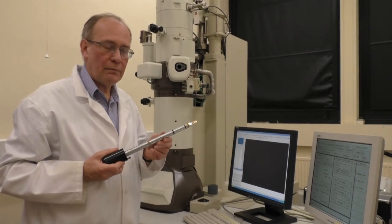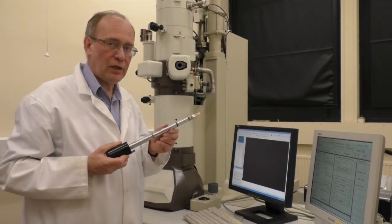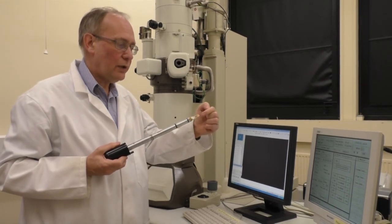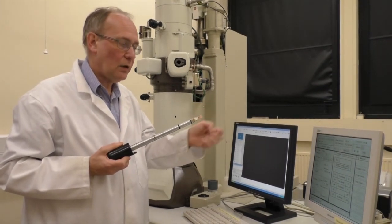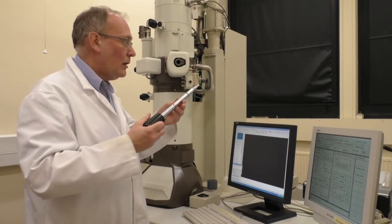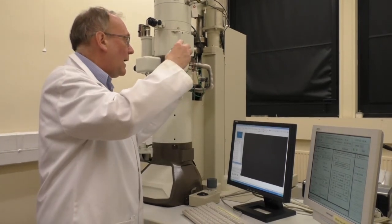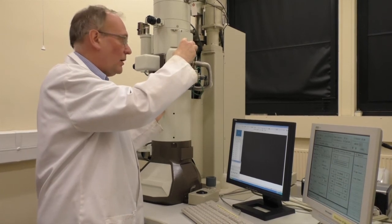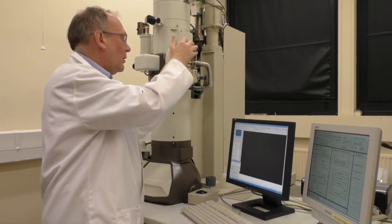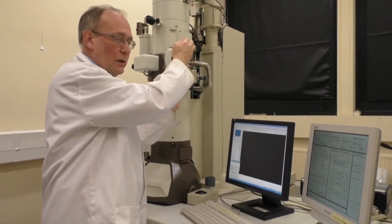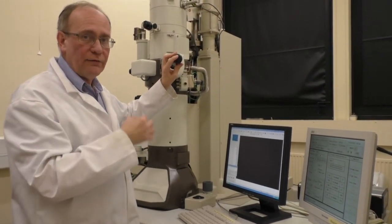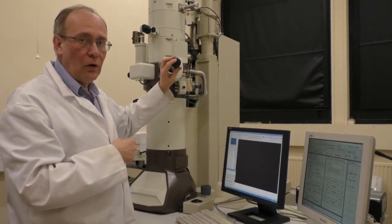So the grid is clamped into a special rod, a specimen rod, which we can insert into the electron microscope. This is where the grid is located here. And then I can move the rod up to the airlock. It needs to be an airlock, because there's a vacuum inside the microscope. And I press it into the airlock, and allow the airlock to pump out, so that there's a vacuum around the grid in the airlock.